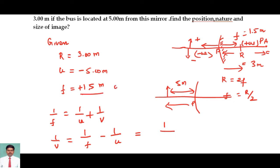1.5 meters, or we can simply write it as 3 by 2 meters, so I am writing here 3 by 2 for simplification. And then it is plus 3 by 2 minus 1 by the u value, which is minus 5.